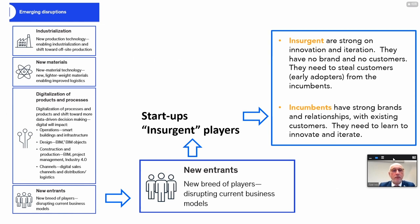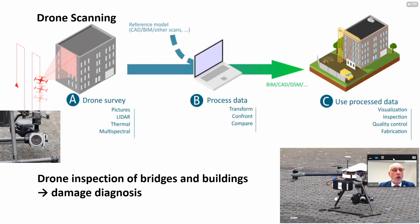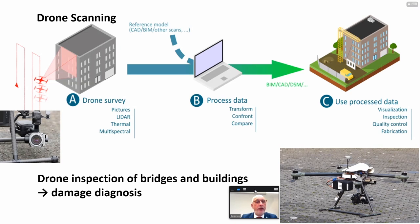Drones are also important in the actual construction industry. Drones can be used for scanning buildings and bridges, using different types of cameras — for instance, infrared cameras. The obtained data are processed and can be used for visualization, quality control, fabrication, and inspection. Drone inspection of bridges and buildings is very important in damage diagnosis.